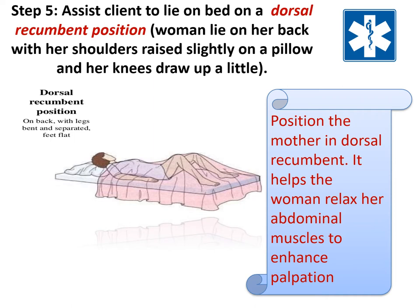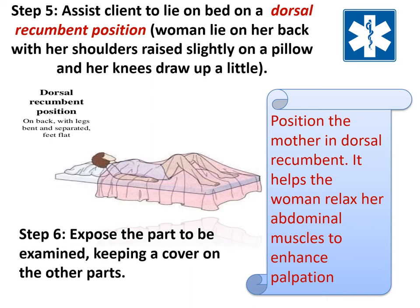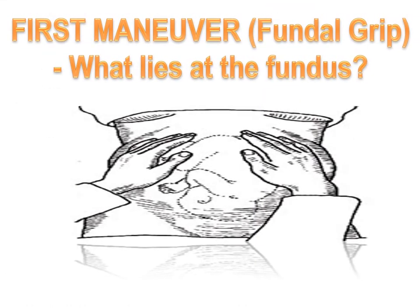For the first maneuver — Fundal Grip: what lies at the fundus? Step seven: face the client's head. Step eight: using both hands, palpate the fundal area. Expect to palpate a soft, irregular mass in the upper quadrant of the maternal abdomen.